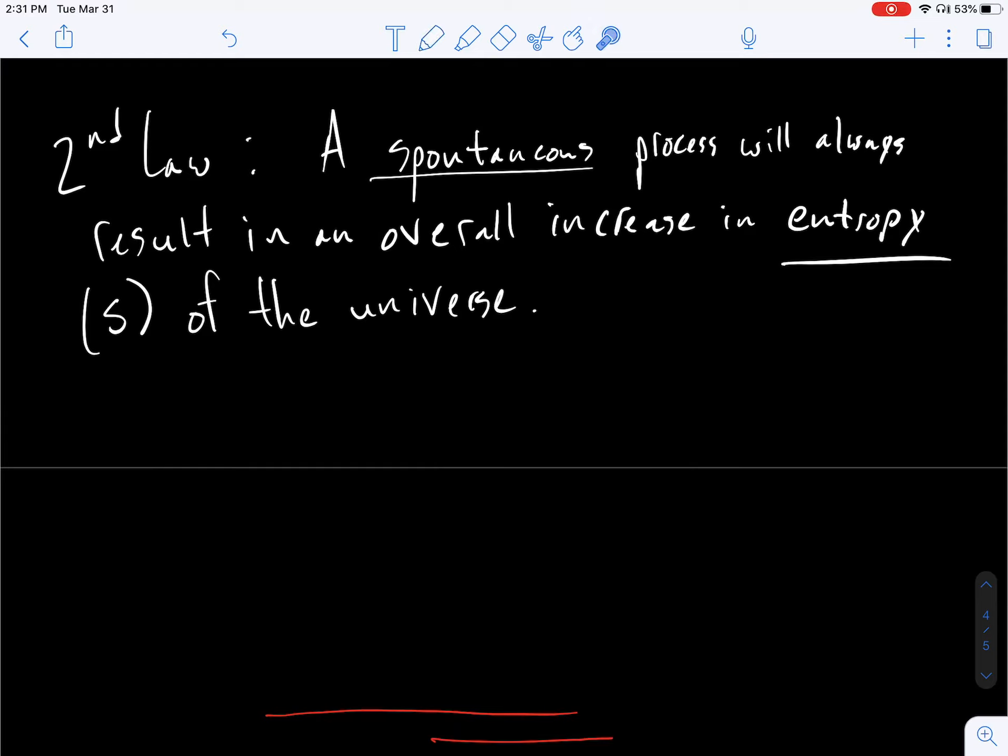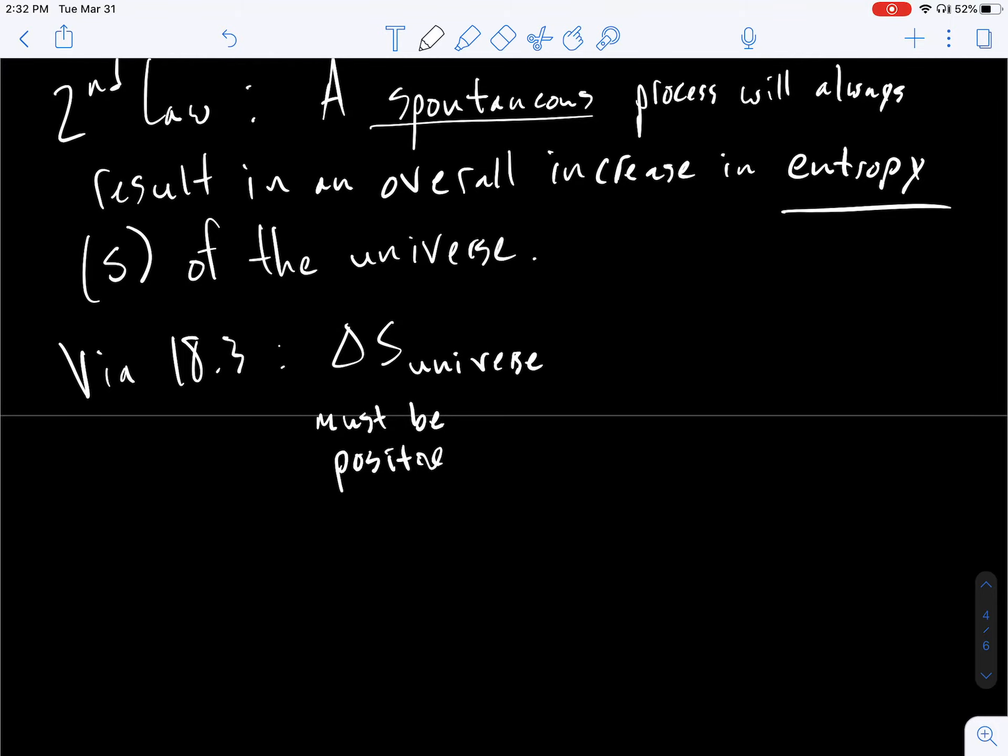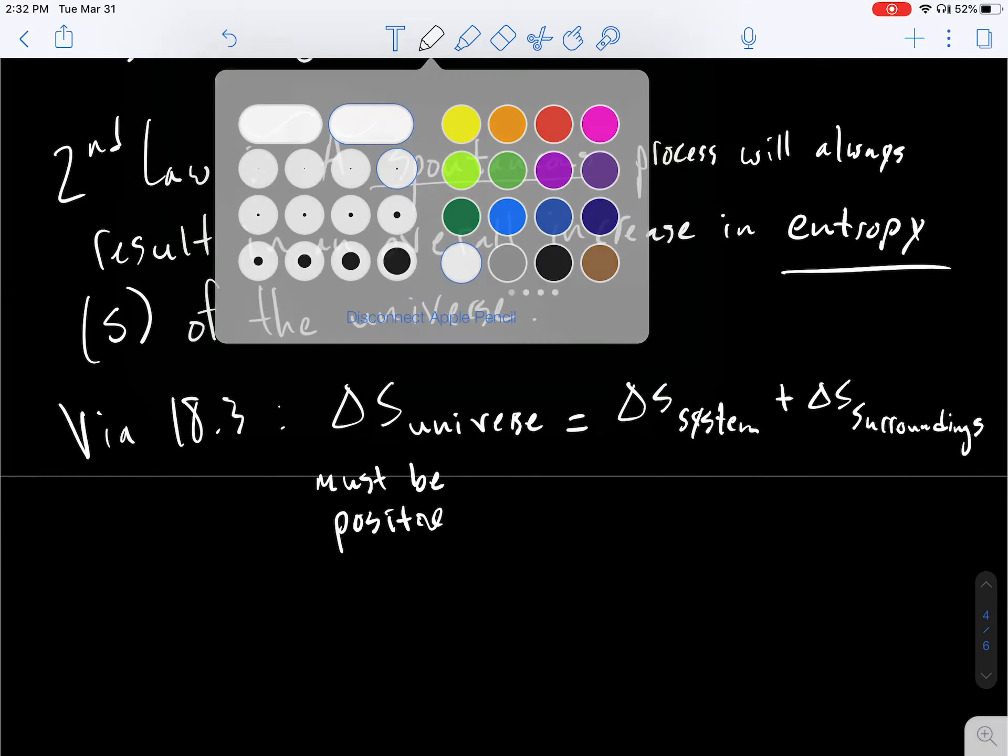Second law of thermodynamics says a spontaneous process will always result in an overall increase in entropy of the universe. So I need to remind us that what this means practically is that delta S of the universe has to be positive. So that means we have been studying delta S of system, but what we need to know is the delta S of the surroundings as well.